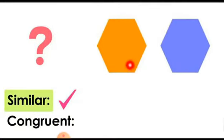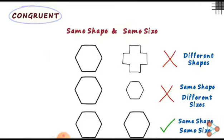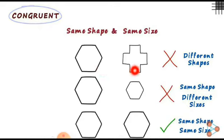These figures are similar figures, yes, because they have the same shape. So we can say that all concurrent figures are similar figures.